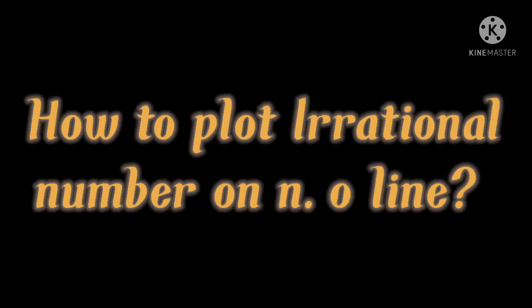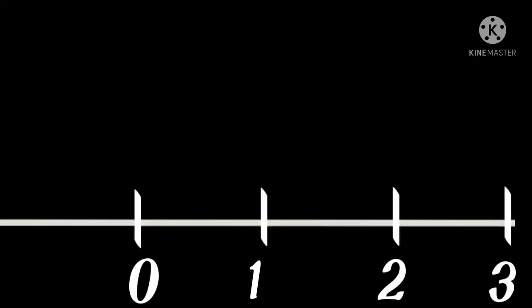Now we have to plot √2 on the number line. Till now the numbers were easy to plot — the rational numbers were in the p/q form and very easy to plot. But now we have to plot √2, which is an irrational number. The easiest way is to take one unit on the positive side of the number line — here is one unit from 0 to 1.